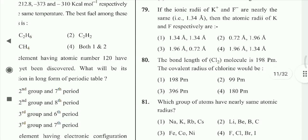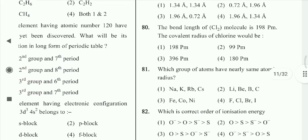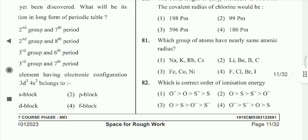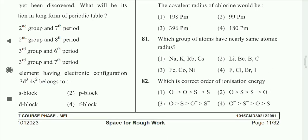Option 3rd is correct. Question 80: The bond length of Cl₂ molecule is 198 pm, so the covalent radius of chlorine would be 99 pm. Question 81: Which group of atoms has nearly the same atomic radius? Iron, cobalt, nickel — option 3rd is correct.